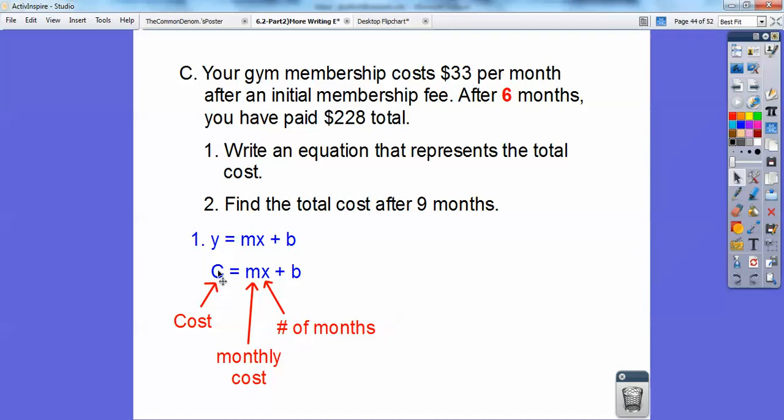That's where the $228 comes in. So I'm going to put $228 here, $33 here, and $6 here, and I'm going to solve for b to get my equation. That's my membership fee, is the b part.